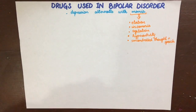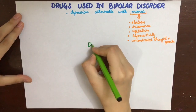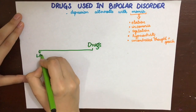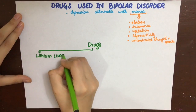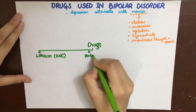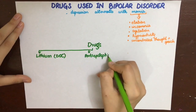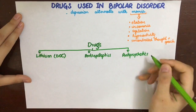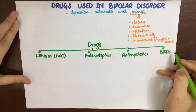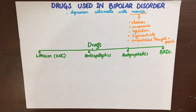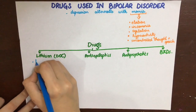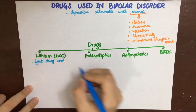The main drugs used in bipolar disorder include lithium, which is considered the drug of choice to treat the manic phase. Other drugs can be anti-epileptics, antipsychotics, and benzodiazepines. All of these are CNS depressants and thus will inhibit or suppress the mania associated with bipolar disorder. In this video we will discuss lithium in detail, as we have already discussed anti-epileptics, antipsychotics, and benzodiazepines previously.